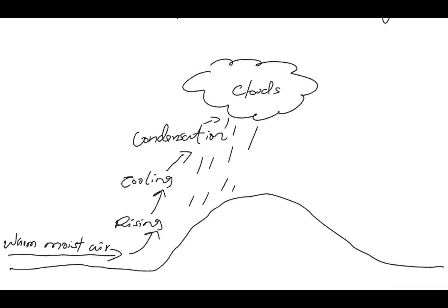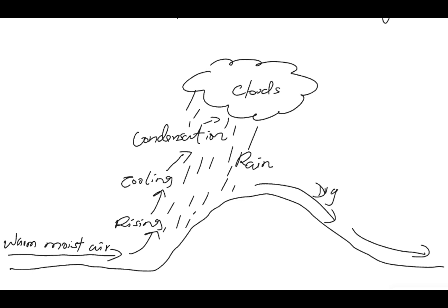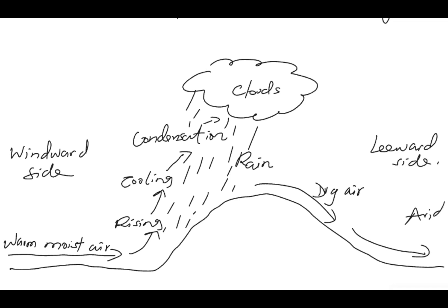These clouds give precipitation in the form of rain on this side of the mountain. On the other side, dry air descends, collecting all available moisture, which leads to arid conditions. The side from which the air is blowing is known as the windward side, and the side toward which the wind is blowing is called the leeward side — it is usually arid because the dry air, having lost its moisture, collects all the moisture there.